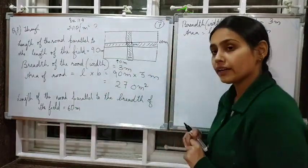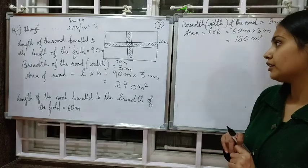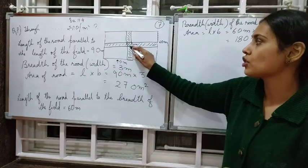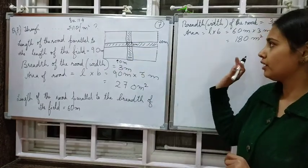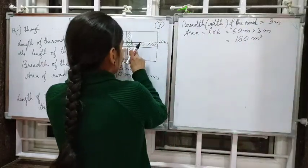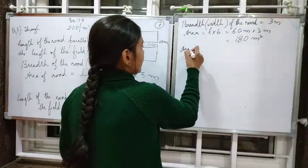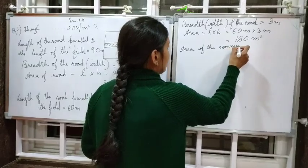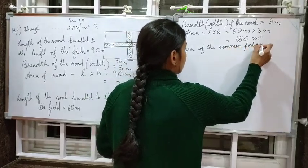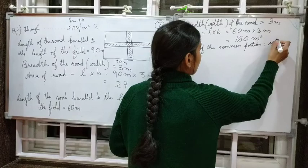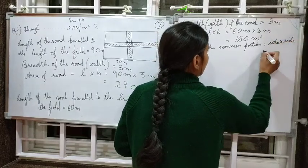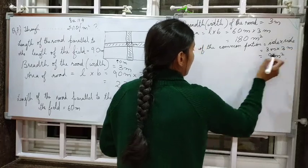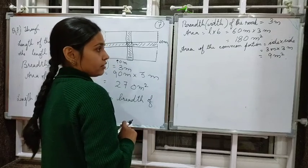Now we find the total area. We add both road areas, but there is a common portion where the roads overlap, so we remove it. Area of the common portion equals side into side, which is 3 meters into 3 meters, equals 9 meter square.